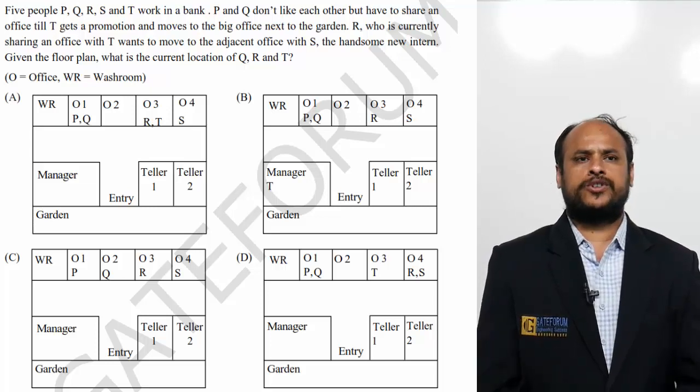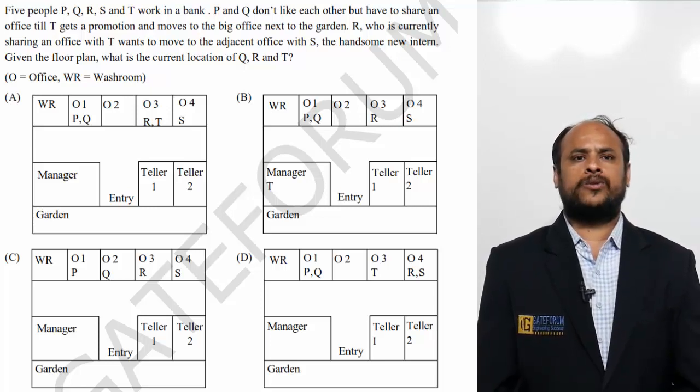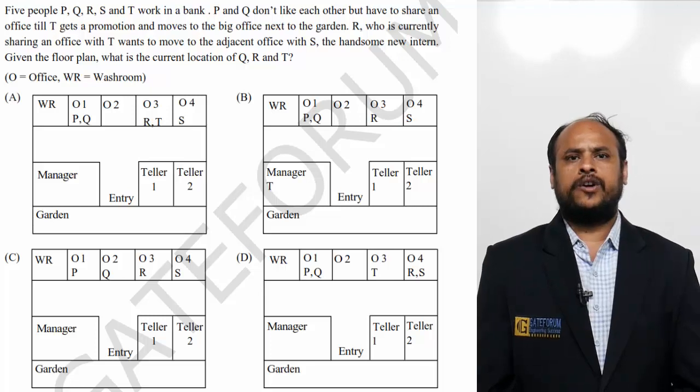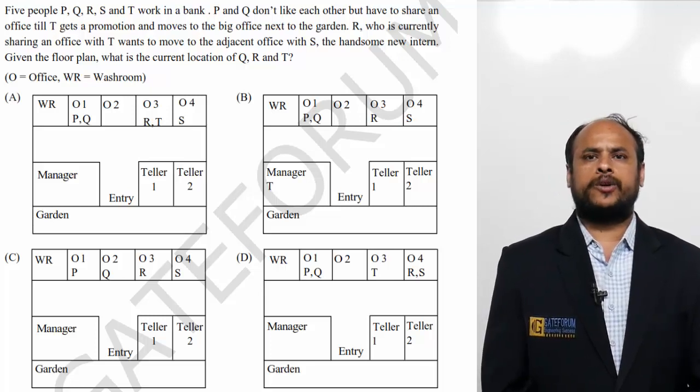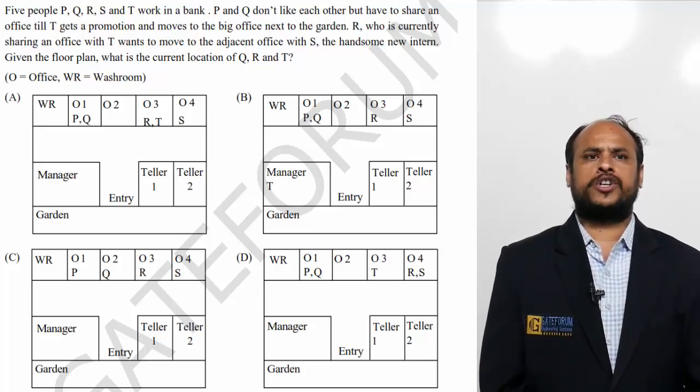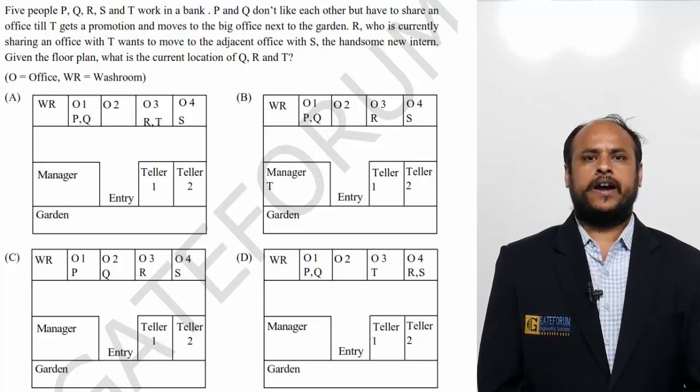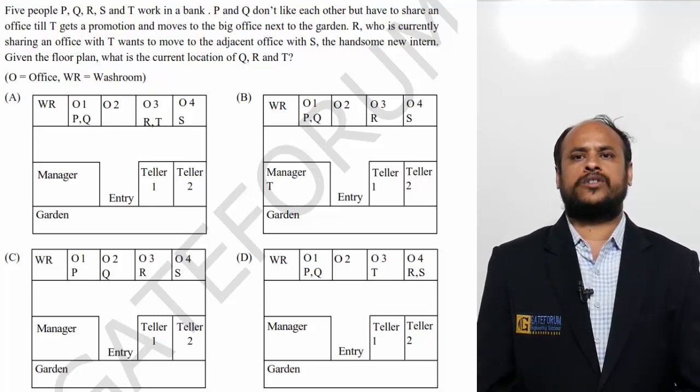This question belongs to ECE. The question is: 5 people P, Q, R, S and T work in a bank. P and Q don't like each other but have to share an office till T gets a promotion and moves to the big office next to the garden.